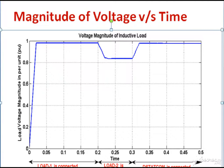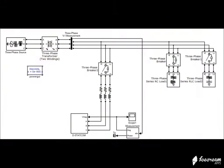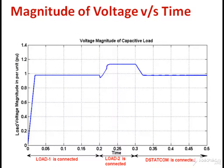The same MATLAB simulation can be performed for RC load as well. Similar to the RL load, the configuration of the VSC and circuit breaker is the same; only the load has been changed to RC. This is the output waveform for RC load where load 1 is connected for 0.2 seconds. When capacitive load 2 is connected, there is a voltage swell, and after connection of D-STATCOM at 0.3 seconds, the voltage is again maintained at 1 per unit.